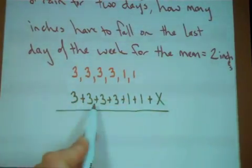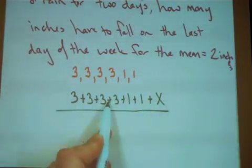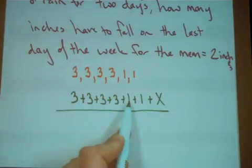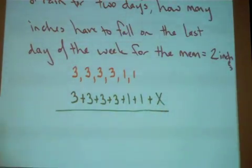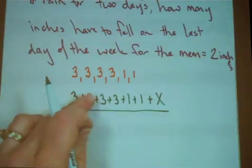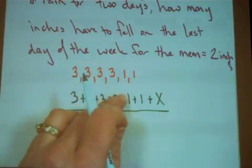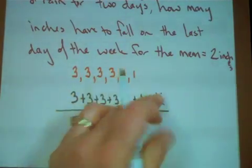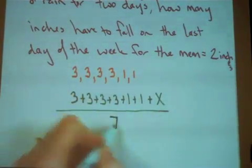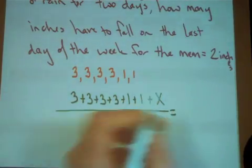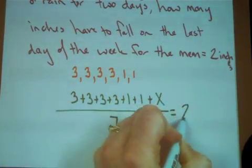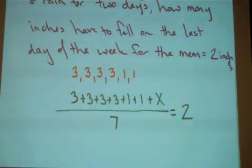So I have three plus three plus three plus three plus one plus one plus that unknown value, and there are seven days in a standard week. The problem says I want my mean to be two.